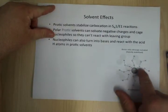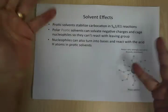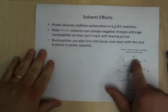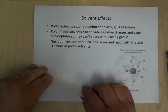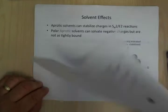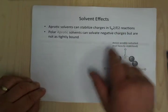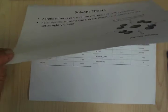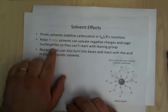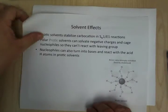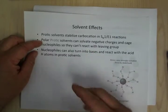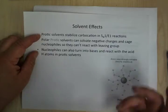Protic solvents have the ability to stabilize charges. For SN1 and E1, the first thing that happens is the leaving group leaves to leave a carbocation behind, and protic solvents can solvate the negative charge and cage up the nucleophile. For SN2, protic solvents can cage up your nucleophile to keep it from reacting. Also, some nucleophiles can react with the acidic hydrogen on a protic solvent, turning into a base, and you can lose your nucleophile — so you have to be really careful.